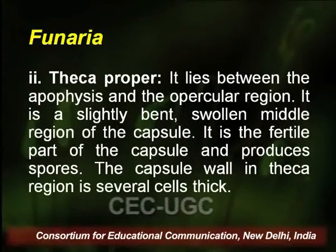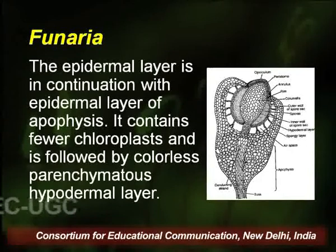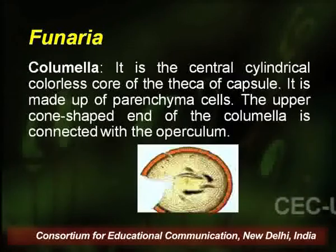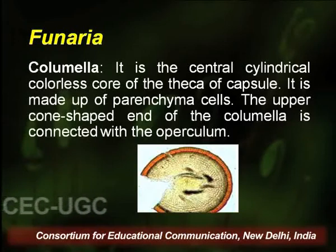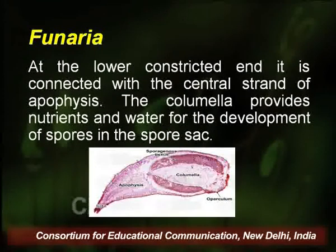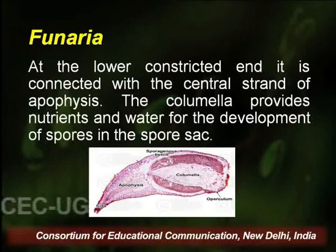The second portion of the capsule is the theca proper, lying between the apophysis and the opercular region. It is a slightly bent, swollen middle region of the capsule and is the fertile part that produces spores. The capsule wall in the theca region is several cells thick. The epidermal layer is in continuation with that of the apophysis, contains fewer chloroplasts, and is followed by a colourless parenchymatous hypodermal layer. Columella is a central cylindrical colourless core of the theca, made up of parenchyma cells. The upper cone-shaped end of the columella is connected with the operculum, and at the lower constricted end it connects with the central strand of apophysis. The columella provides nutrients and water to the developing spores in the spore sac.